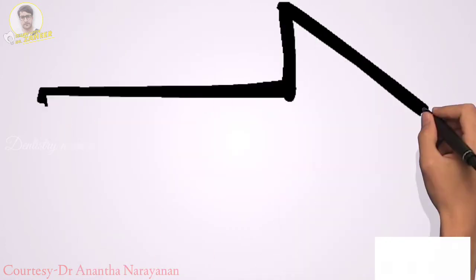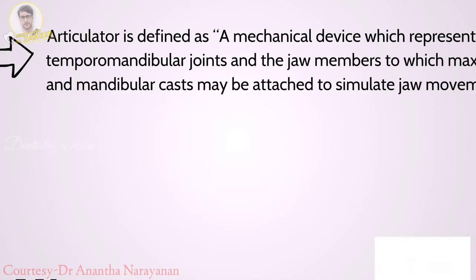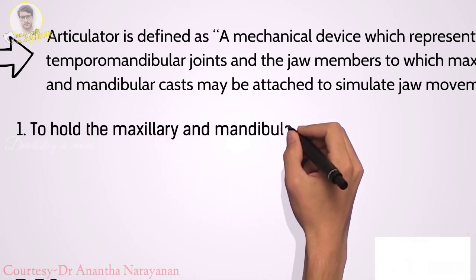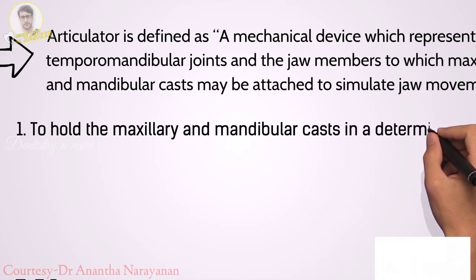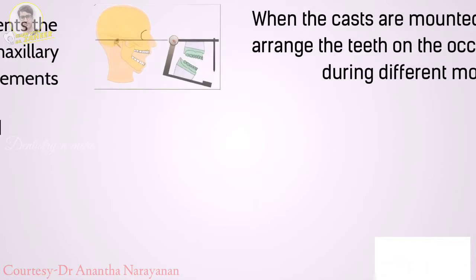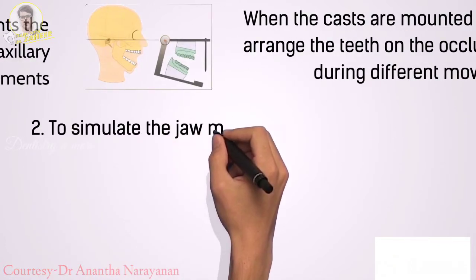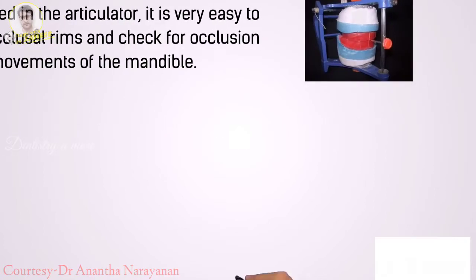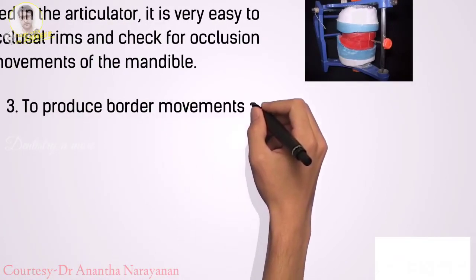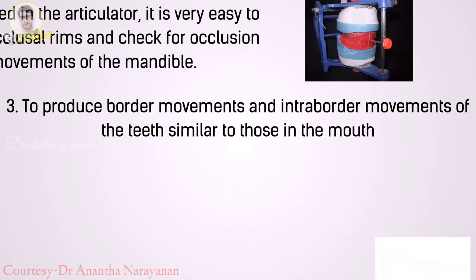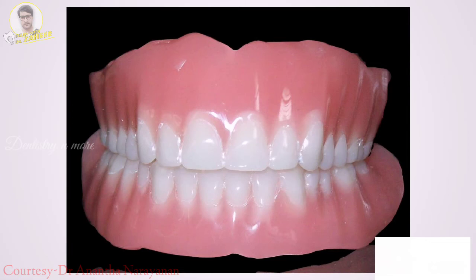There are three main purposes of this device. First, to hold the maxillary and mandibular casts in a determined fixed relationship. Second, to simulate the jaw movements like opening and closing. Third, to produce border movements and intra-border movements of the teeth similar to those in the mouth. This will ensure fabrication of prosthesis with minimum errors.